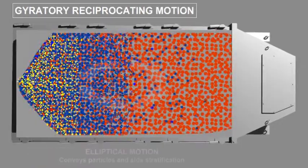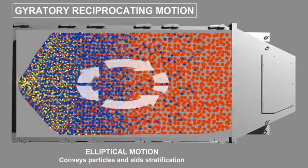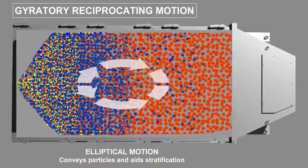The motion gradually changes to an elliptical pattern, which promotes conveying and enables the screener to utilize a very low screen angle.